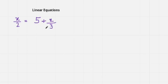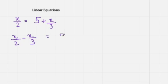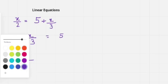Now we have another question. We need to solve for x, so I will bring all the x terms to one side. Since x over 2 is added, it will be subtracted on the other side, giving x over 2 minus x over 3 equals 5. We need to make the denominators the same, so I will take the LCM of 2 and 3, which is 6.